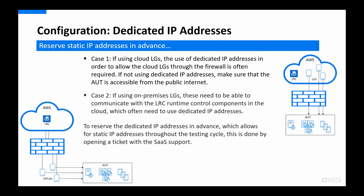Regarding dedicated IP addresses, there are two use cases. First, if testing uses cloud load generators and your application under test is behind the company firewall, dedicated IP addresses for the cloud load generators are often required. Since most organizations need some time to allow IP addresses through firewalls, this setup needs to be done in advance — please open a ticket with SaaS support to request dedicated IP addresses. Second, if you are using on-premises load generators, these need to be able to communicate with the LoadRunner Cloud runtime control components in the cloud, so you may also need dedicated IP addresses if you have a restrictive firewall between the load generators and the internet. Both use cases are outlined in the online help.